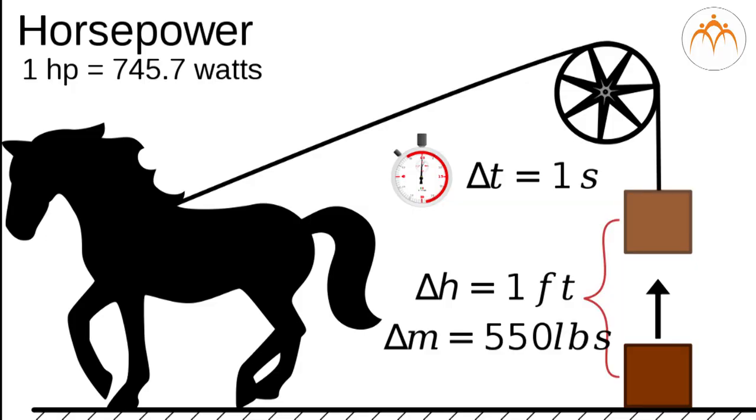Power was a new way for Watt to compare his engines to the machines they were designed to replace: horses. Therefore, one horsepower is equal to 746 watts.